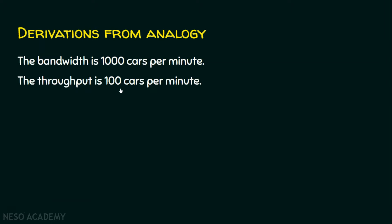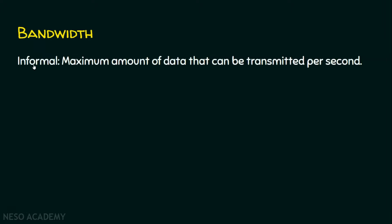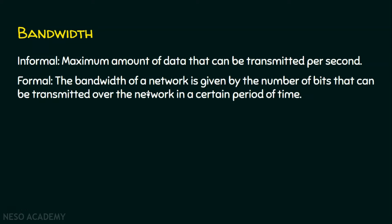Let's start with the first fundamental way of measuring network performance: the bandwidth. Informally, bandwidth can be defined as the maximum amount of data that can be transmitted per second. Formally, the bandwidth of a network is given by the number of bits that can be transmitted over the network in a certain period of time. We have two kinds of networks — wired and wireless — and bandwidth is applicable to both. In a wired network, we measure it in bits per second; in a wireless network, it is measured in hertz, because wireless deals with frequencies.